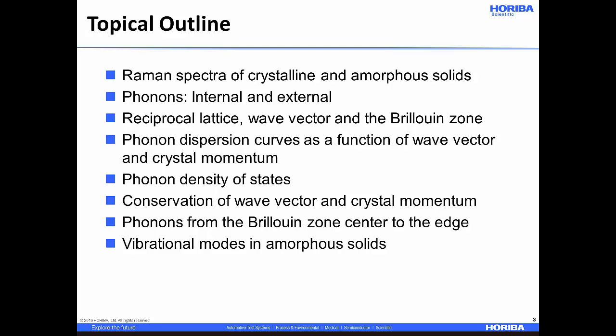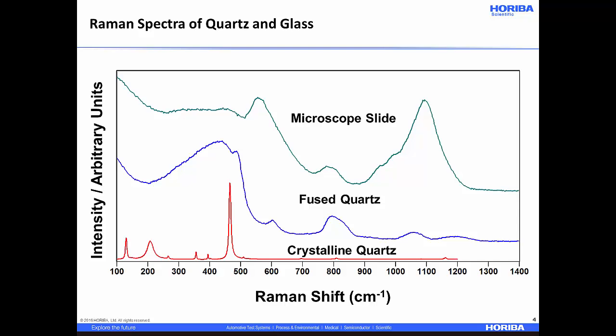The conservation of wave vector and crystal momentum is absolutely essential to understanding why one sees Raman scattering from crystals at only the so-called Brillouin zone center. In a crystalline material, only those phonons from the Brillouin zone center are Raman active. We'll cover phonons from the center to the edge, and then finally conclude with vibrational modes in amorphous solids.